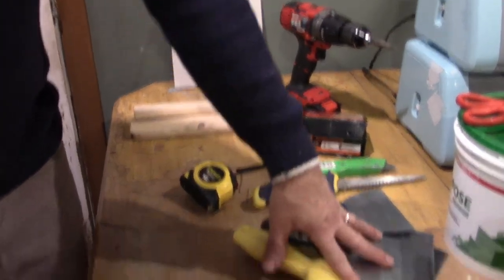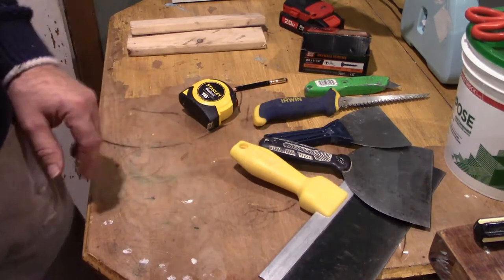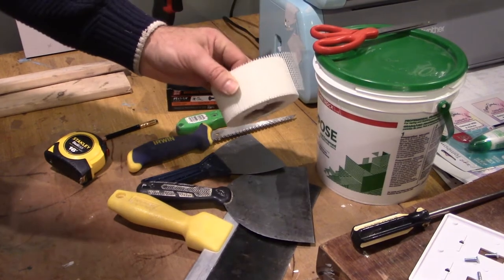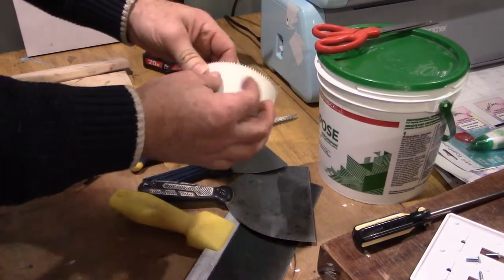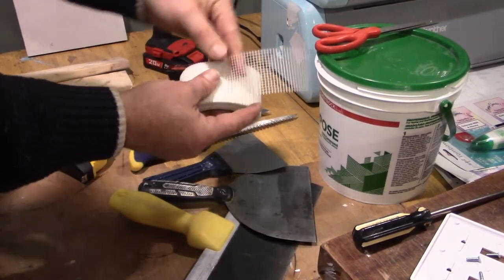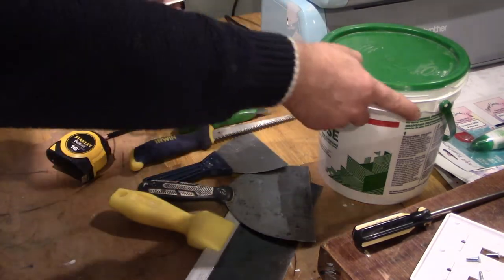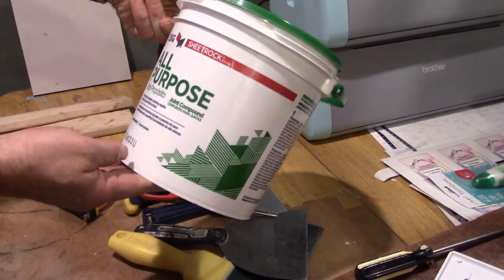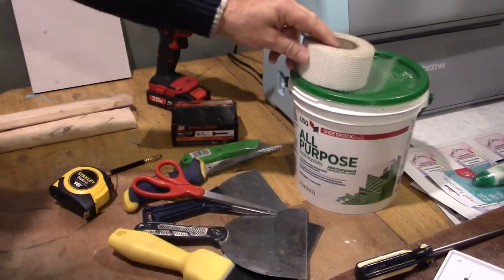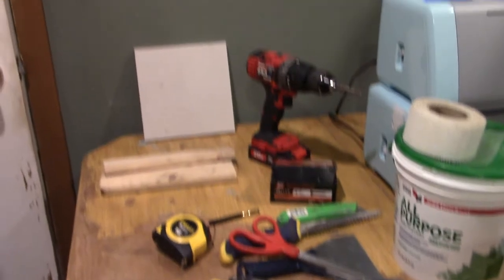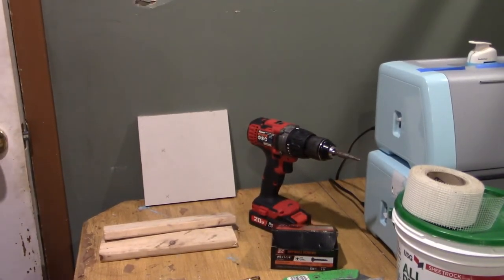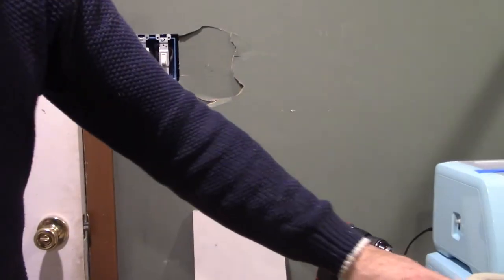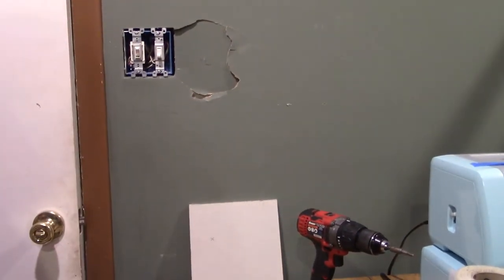You're gonna need a couple of different sized spackling knives. I've got some of the fiber mesh sheetrock joint tape. A pair of scissors with which I'll cut that. And I've got a bucket of all-purpose sheetrock joint compound. Any place you want to buy it. Lowe's, Home Depot, Hardware Store. You just could use a small little container. This is way more than enough for what we're doing here.